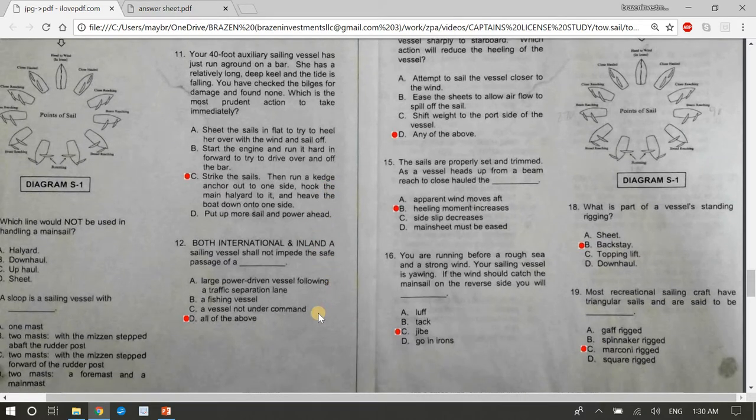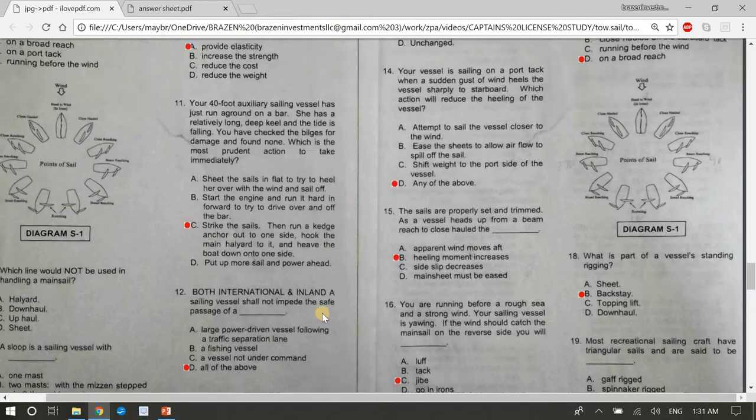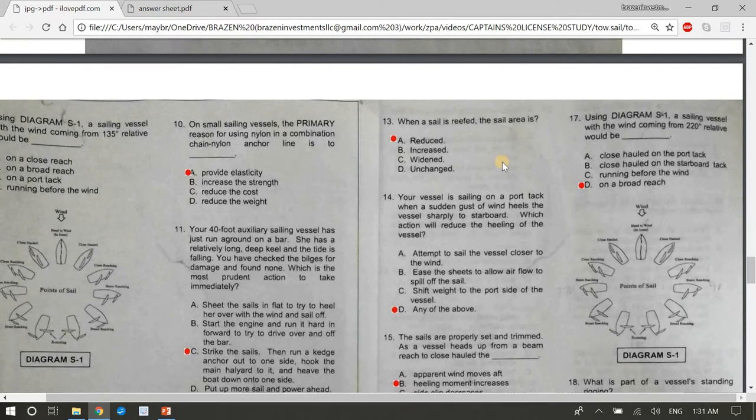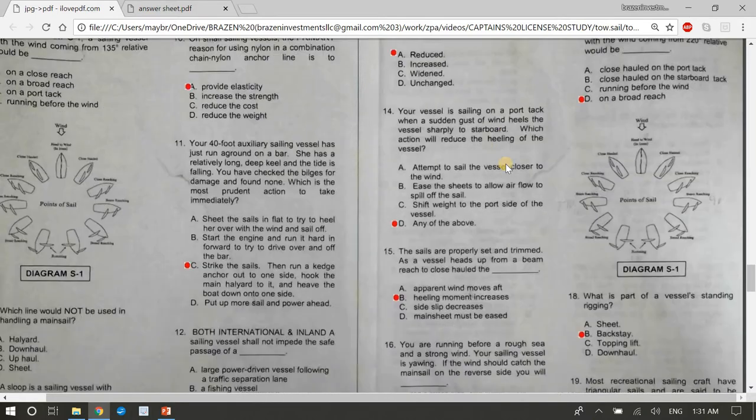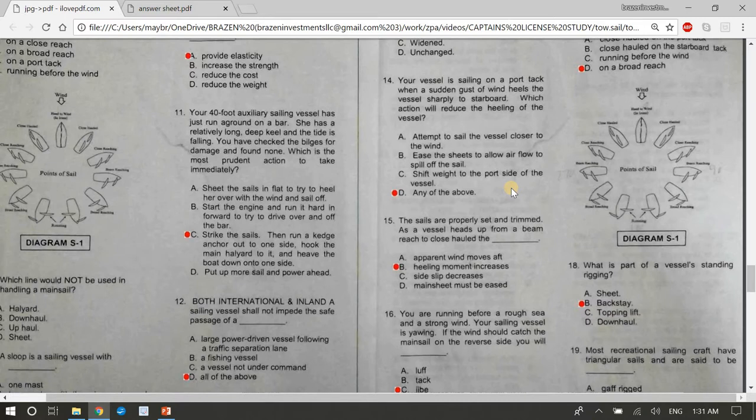Twelve, both international and inland, a sailing vessel shall not impede the safe passage of... A large power driven vessel following a traffic separation lane. A fishing vessel. A vessel not under command. The answer is D, all of the above. You shall not impede the safe passage of any of those. Thirteen, when a sail is reefed, the sail area is... A, reduced. Fourteen, your vessel is sailing on a port tack. When a sudden gust of wind heals the vessel sharply to starboard. Which action would reduce the healing of the vessel? Attempt to sail the vessel closer to the wind. Ease the sheets to allow airflow to spill off the sail. Shift weight to the port side of the vessel. The answer is D, any of the above.